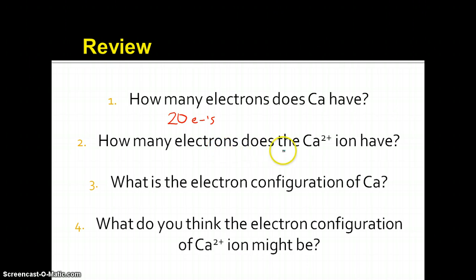Now how many electrons in the calcium ion? Well, I have a 2 plus here, so that means that I lost two electrons. If it became positive, that means I lost electrons. So right now I have 18 electrons.